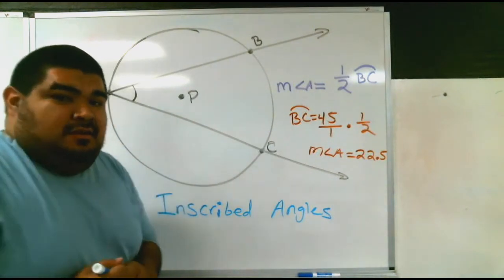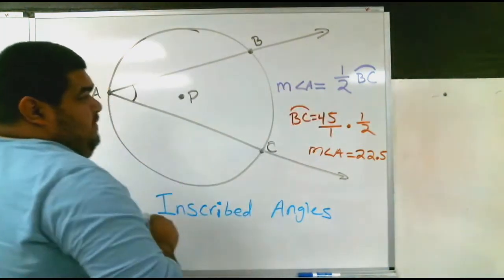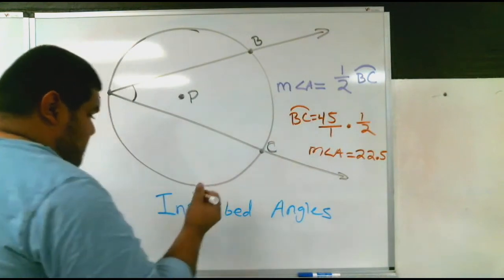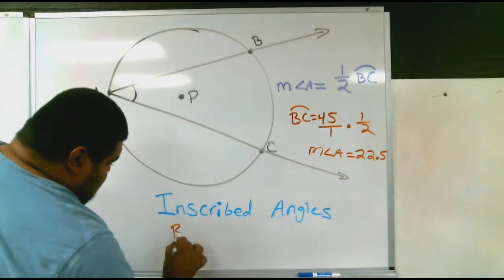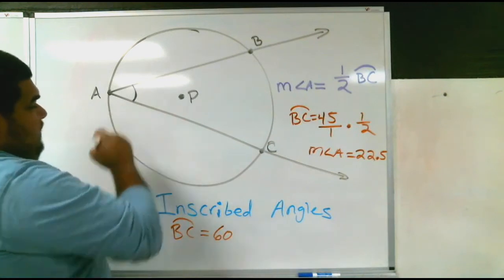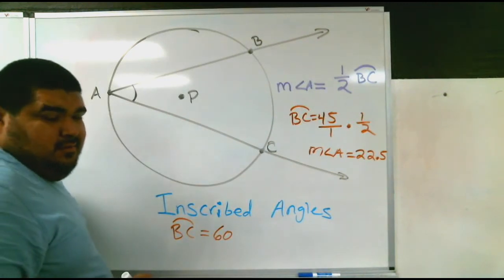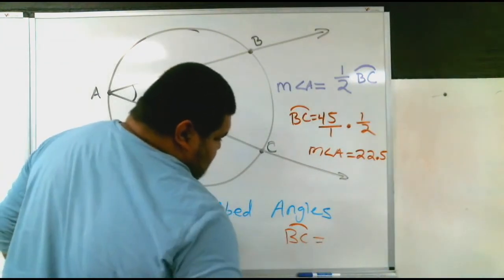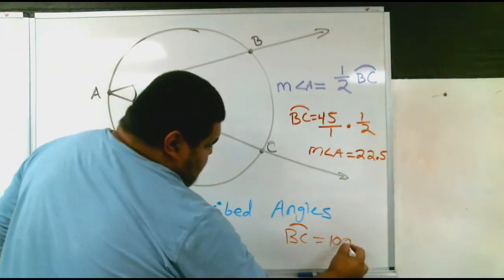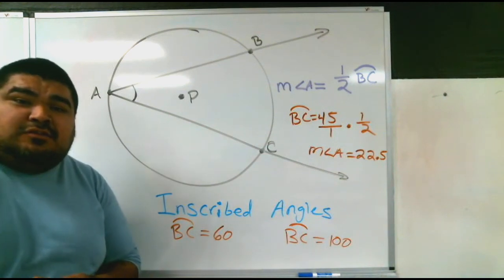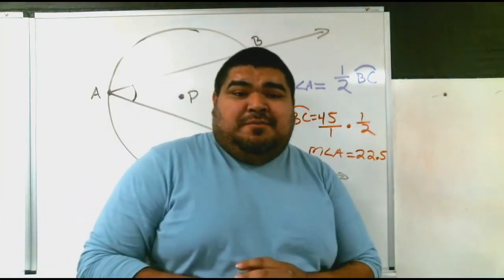So here's your assignment for today, guys. Remember the equation. If I were to have arc BC equals 60, what is angle A? And then one more: arc BC equals 100. What is the measurement of angle A? Don't forget to send your answers as soon as you're done watching the video, and I'll be waiting for your email.